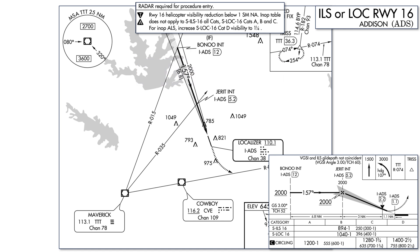Banu is the intermediate fix, and Jarrett is an intersection where the final approach fix is located for the localizer approach. Maverick isn't a point on the approach at all — it's used to identify the Banu and Jarrett intersections. So with no IAF and no procedure turn depicted, how do we join this approach? Notice the note at the top showing that radar is required for the procedure entry. We'll have to be radar identified by ATC and receive vectors for the approach.